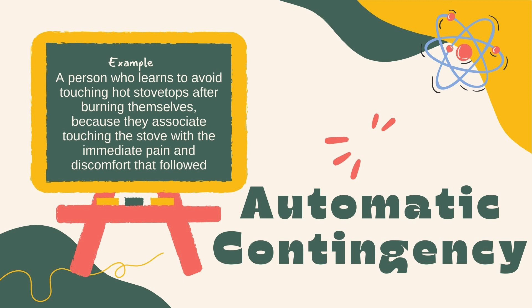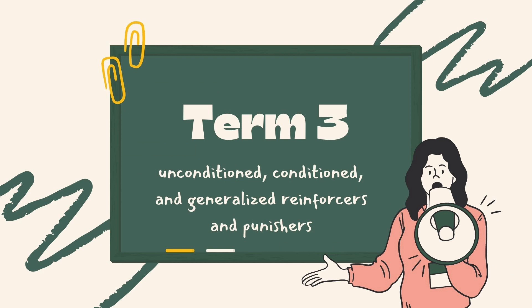While both socially mediated and automatic contingency can be effective in shaping behavior, there are potential drawbacks. Socially mediated contingency can sometimes lead to conformity or a lack of independent thinking, as people may feel pressure to conform to social norms. Automatic contingency may not be as effective in situations where immediate consequences are not obvious, such as in long-term goals or delayed gratification.